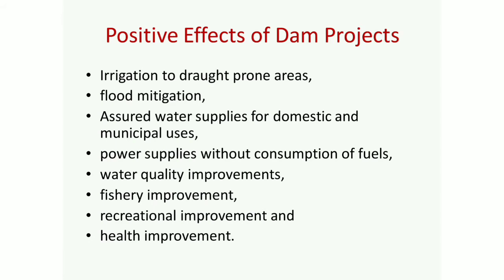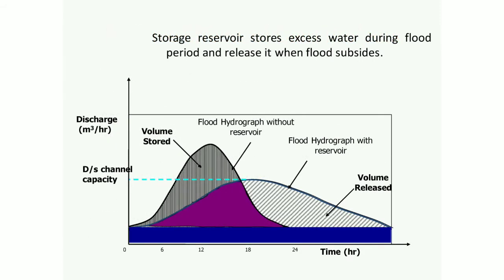People have fears that these projects may lead to flood in the downstream areas. But contrary to this belief, dam projects are actually the best means of flood mitigation. Whenever a flood comes, the reservoir can absorb the flood water so that the downstream is protected. When the natural flood ceases, this stored water can be released in a gradual manner, regulating the flow in the river. For all these, a proper reservoir operation policy clubbed with flood forecasting technique is necessary.